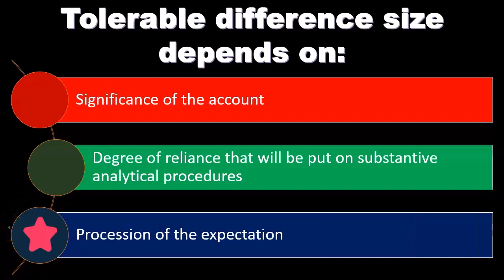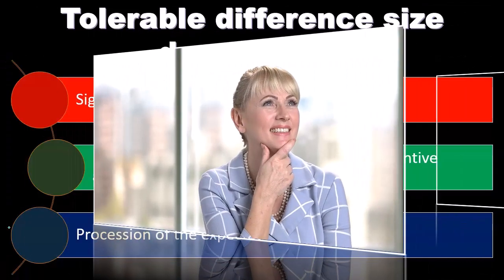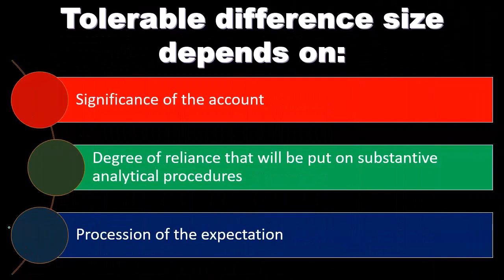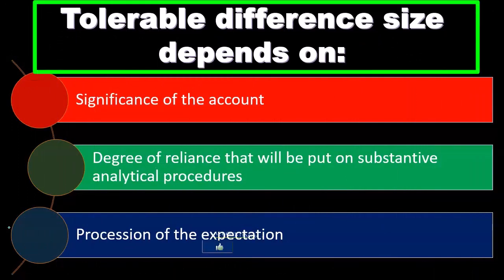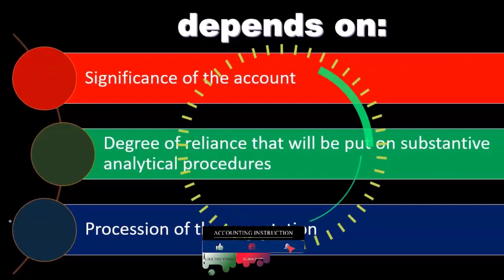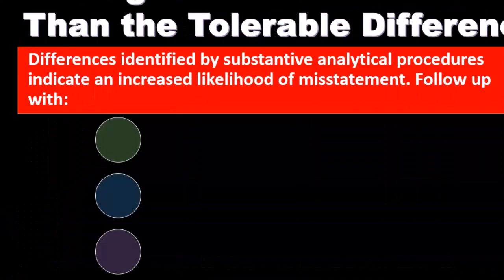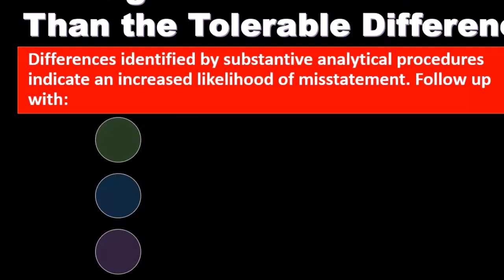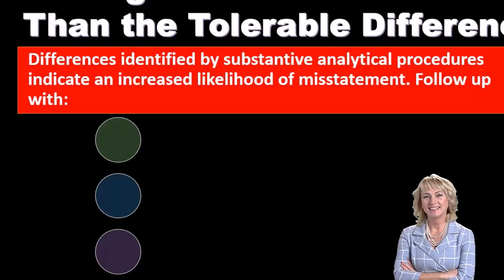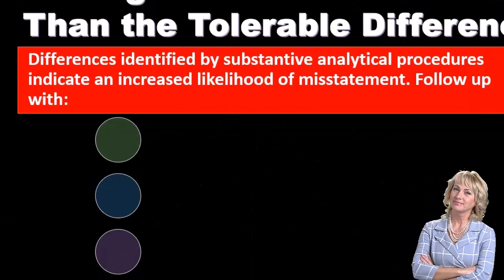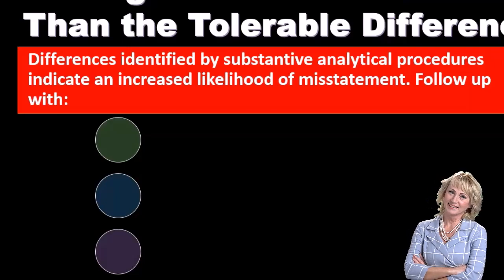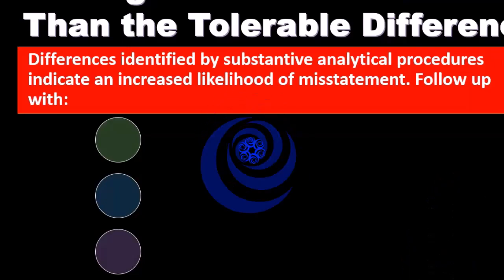Precision of the expectation — some expectations we might have are going to be more precise than others. Some expectations can be pretty precise in terms of what we think the results should be; others will have a wider range. If we're comparing to industry standards, the average might be on the industry standard but there could be a fairly wide range of difference. We investigate differences greater than the tolerable difference — the most basic analytical procedure being to compare one year to the prior year for dollar differences and percentage changes.